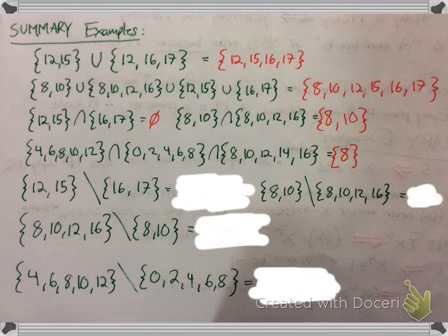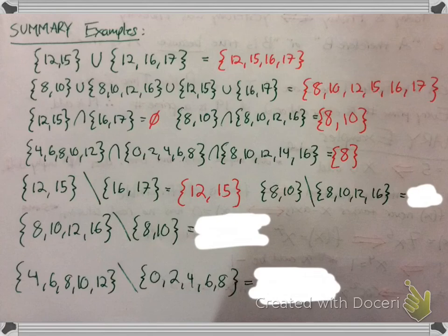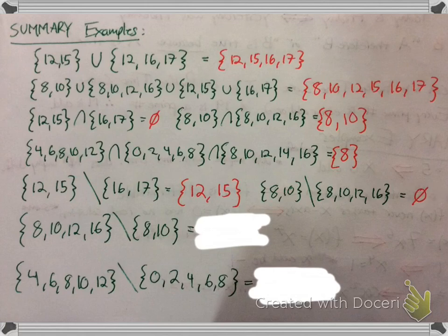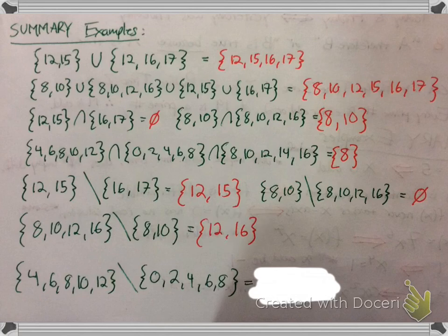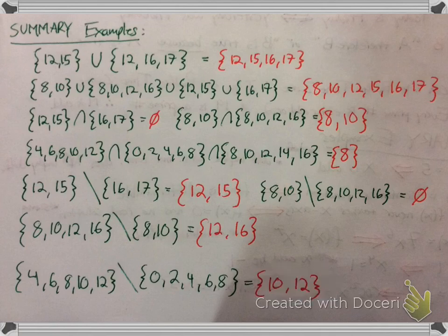Remember order matters for set difference — look at that first set. You'd only be left with the same set A, because you're pretty much subtracting 0 minus 16 and 0 minus 17 — it doesn't affect the first set. Now, 8 and 10 subtracted from that set: 8 and 10 would be removed and you'd be left with nothing. The next similar example is flipped — subtracting 8 and 10 leaves a remainder of 12 and 16. Finally, look at the left set, compare to the right, subtract those numbers, and you'd be left with 10 and 12.